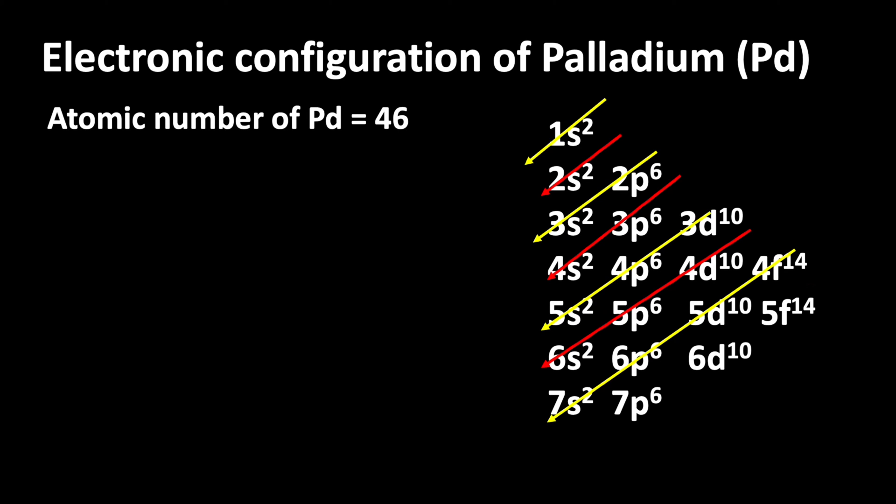1s2, 2s2, 2p6, 3s2, 3p6. After 3p6, electron enters into 4s: 4s2, 3d10, 4p6.